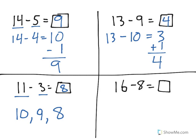And the last one we have here is a doubles. What that means is that double 8 is equal to 16. So if I take away one group of 8, I'm left with the other group of 8. 16 minus 8 is equal to 8. All of these are strategies you can use to help you solve basic subtraction problems.